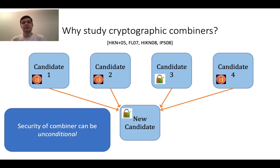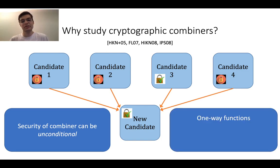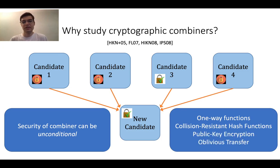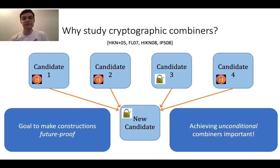Moreover, the security of a combiner can be unconditional, because a combiner's security is only relevant if one of the initial candidates is secure. In fact, there are many constructions of unconditional combiners in the literature — in particular for one-way functions, collision-resistant hash functions, public key encryption, oblivious transfer, and more. One of the main goals of cryptographic combiners is to make constructions future-proof in case assumptions break down. Thus, achieving unconditional combiners is important because we don't want our combiner construction to introduce additional assumptions.